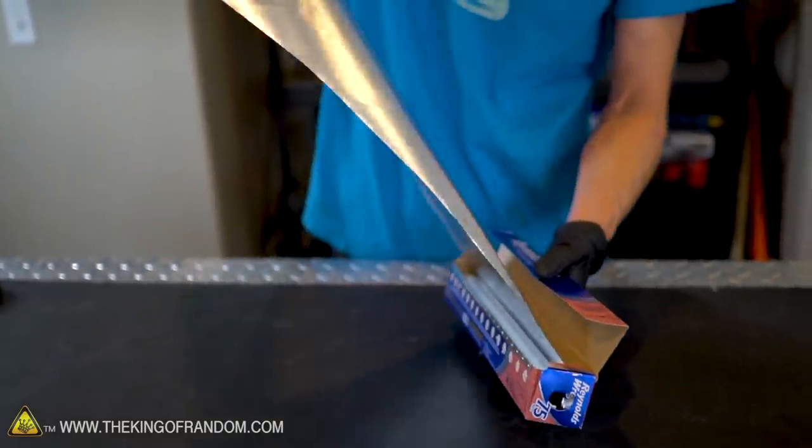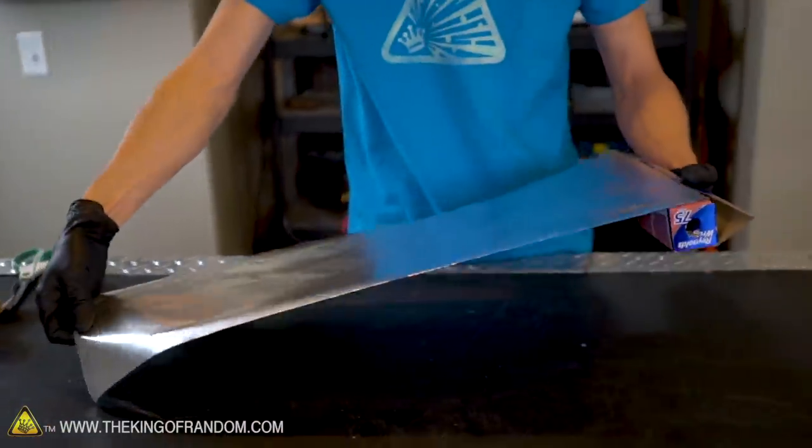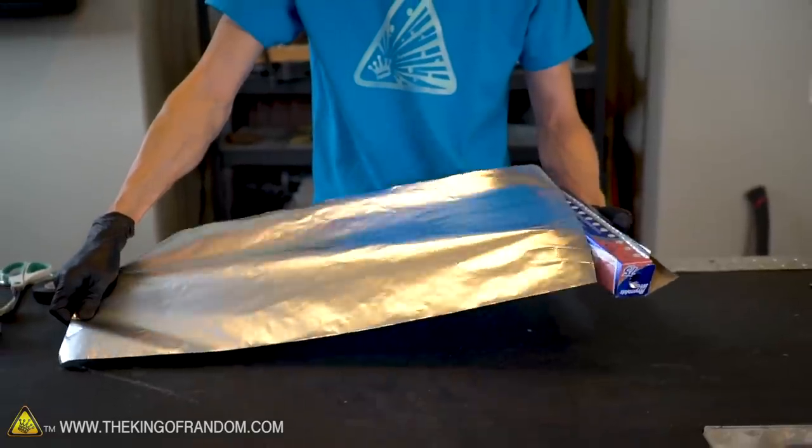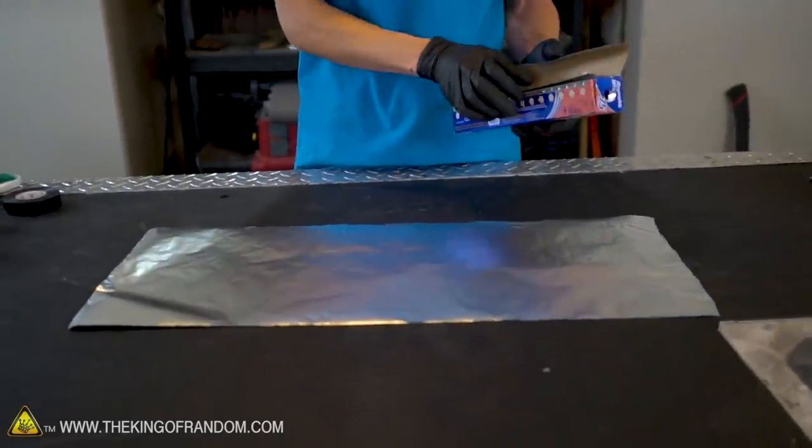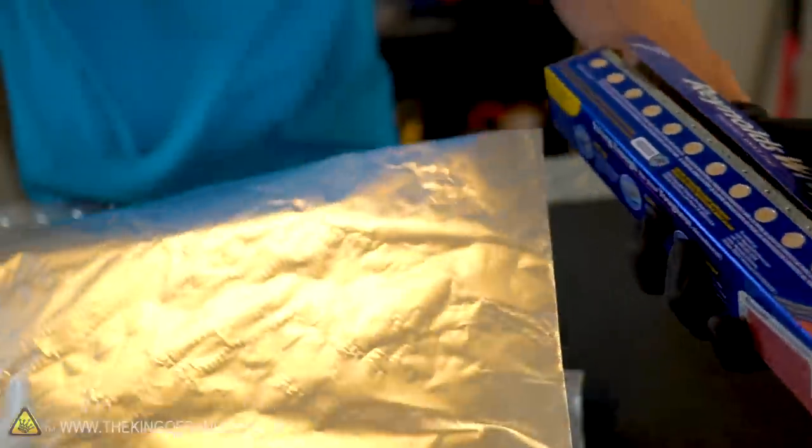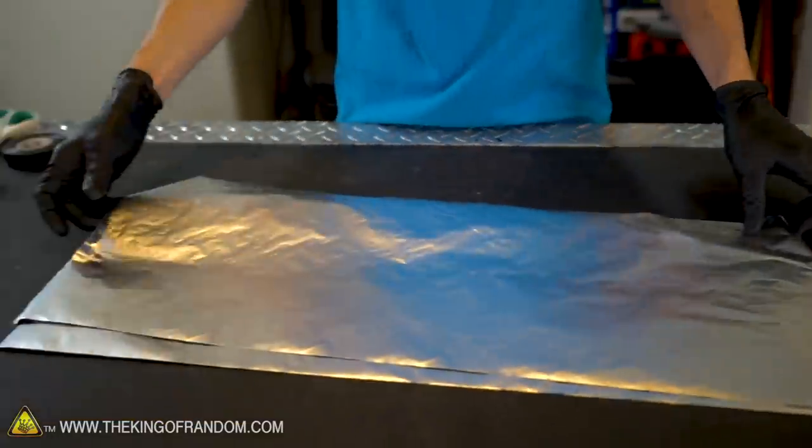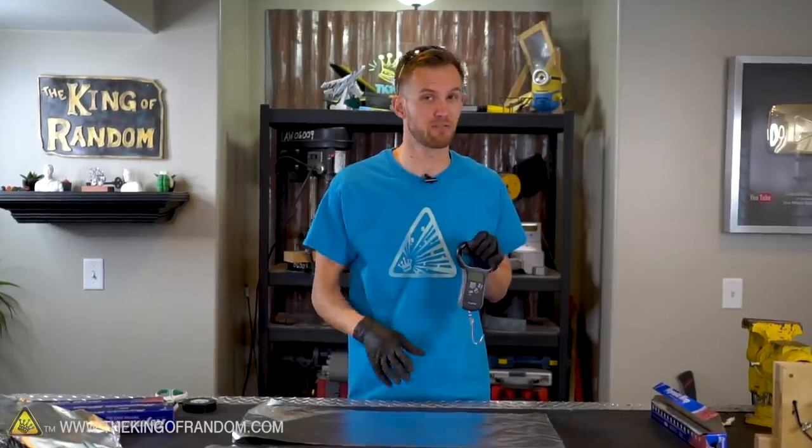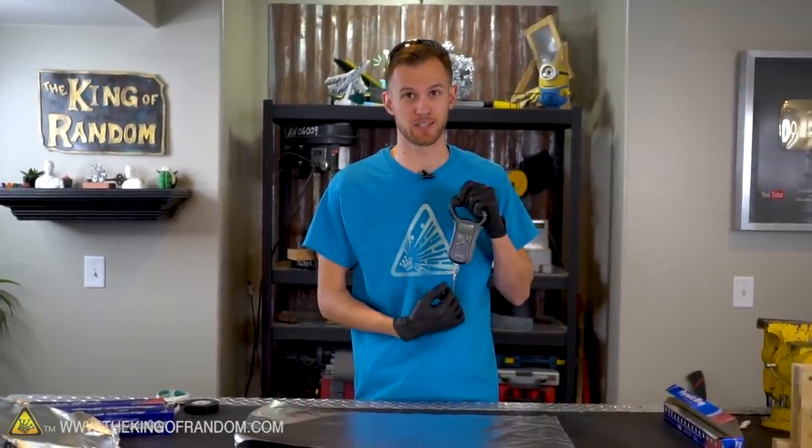Before we get started with the whole rope, we at least want to see if we can have a proof of concept. Can we take one sheet of foil and make it stronger by changing the shape at all? Two sheets of foil, about the same size. Now, we want to attach one of these sheets of foil onto our scale to see how hard we can pull on it before it breaks.